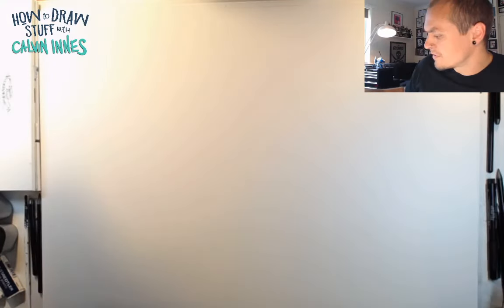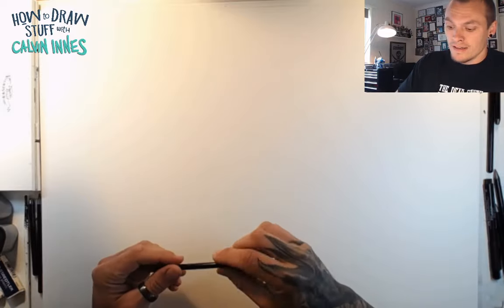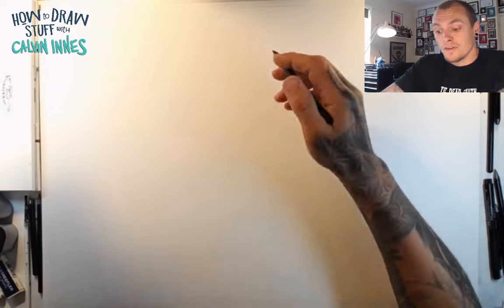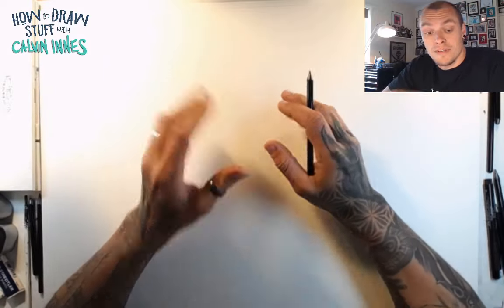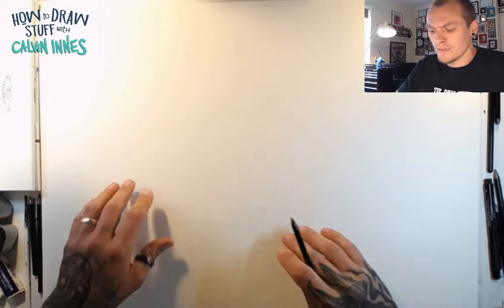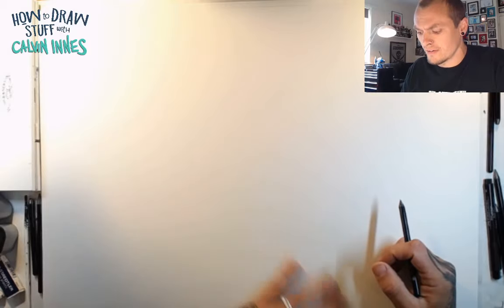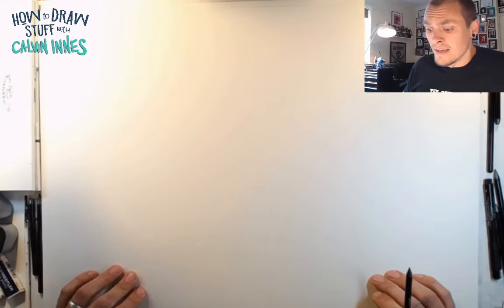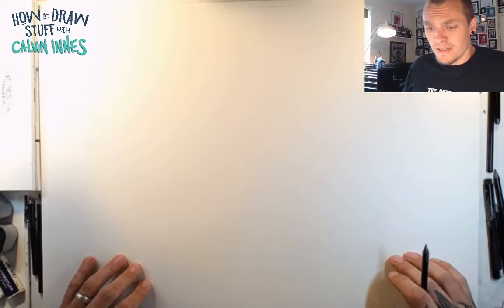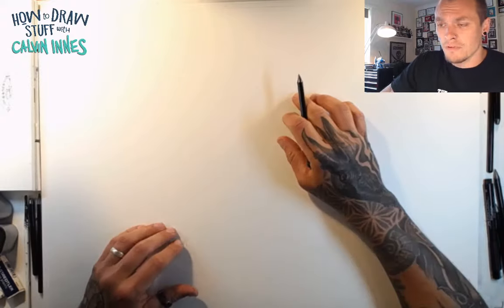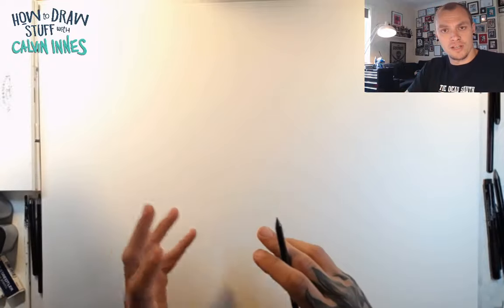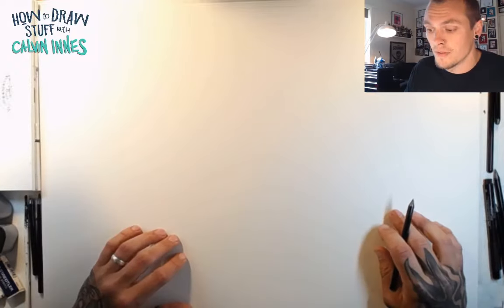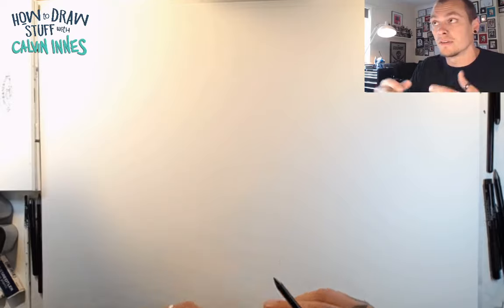Good morning and thank you for joining me for another how to draw stuff with me Calvin Ellis. For today's lesson we're going to go through how to draw different cartoon body types. It's quite an important thing to learn when you're developing your characters. We're not going to look at any detail or faces today — we're just going to do different shapes and different weights to the body, and then you can start adding to those later on and building up your detail.